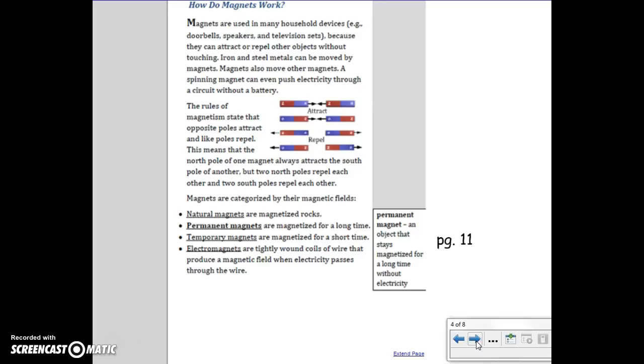The spinning magnet can even push electricity through a circuit without a battery. The rules of magnetism state that opposite poles attract and like poles repel. This means that the north pole of one magnet always attracts the south pole of another, but two north poles repel each other and two south poles repel each other. Magnets are categorized by their magnetic fields.